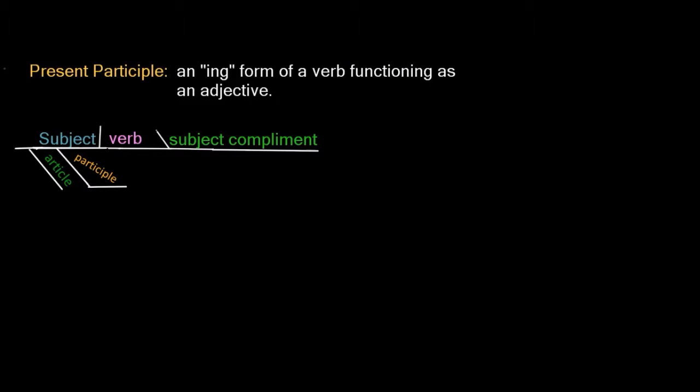So let's look at an example of a present participle — an -ing form of a verb which functions as an adjective. You'll notice in this example our participle is going to be modifying a noun or subject.